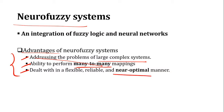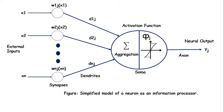Here we have a simplified model of a neuron as an information processor. In this case, x1 to xn are all external inputs merged to a single neuron called the jth neuron.